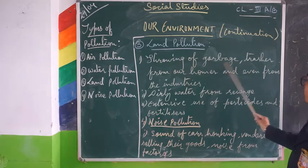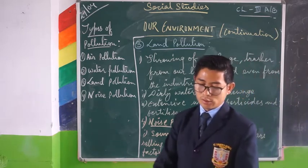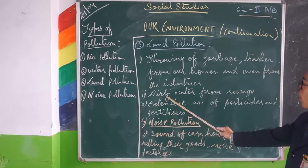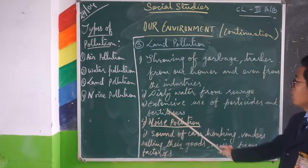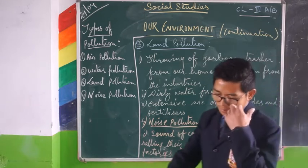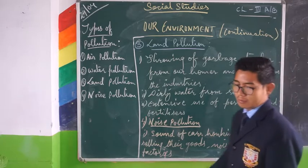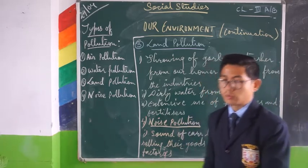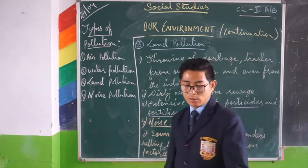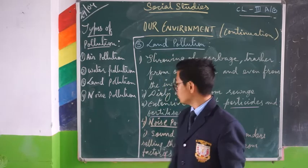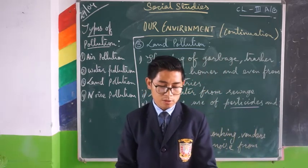Land pollution: throwing of garbage and waste from our homes and from industries leads to land pollution. Water pollution from the sea, which carries unwanted material from sea to the lands, also causes land pollution. Extensive use of pesticides and fertilizers also leads to land pollution. Pesticides are used by farmers to kill insects or protect their crops. If these are used in large quantities, the land loses its quality.